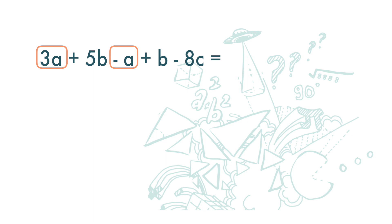3a and negative a are like terms so we can add or subtract them. 3a minus a we get 2a. 5b and b are like terms so we get plus 6b. Negative 8c has no other like term so we just maintain it as negative 8c.